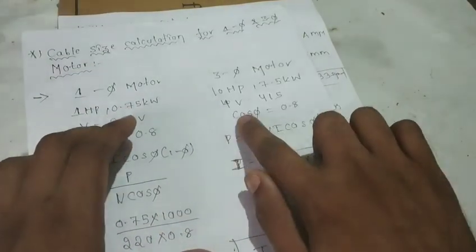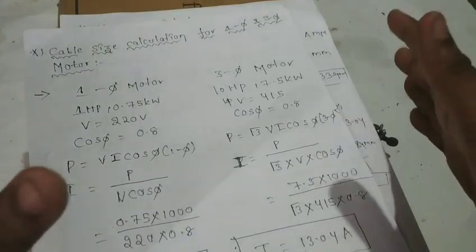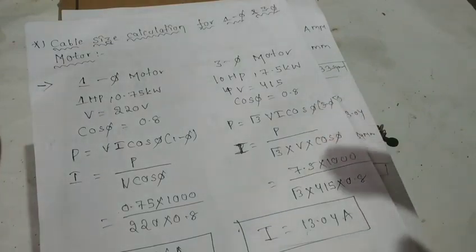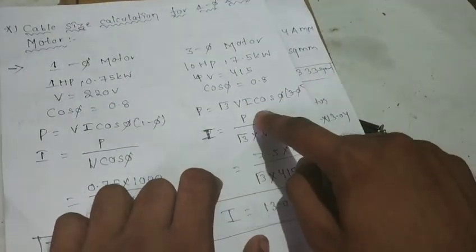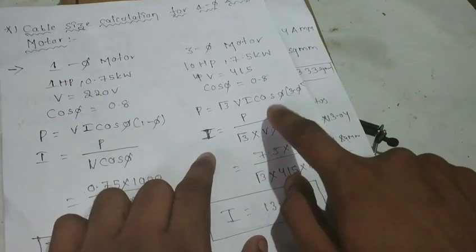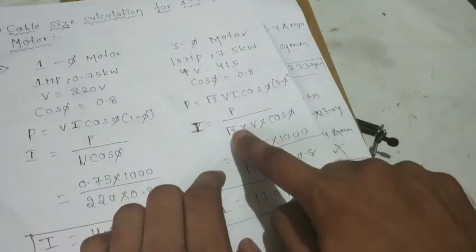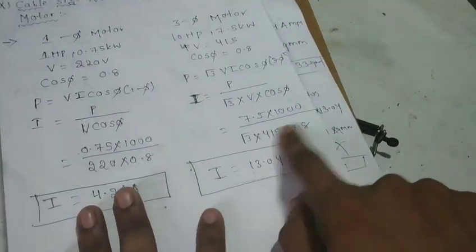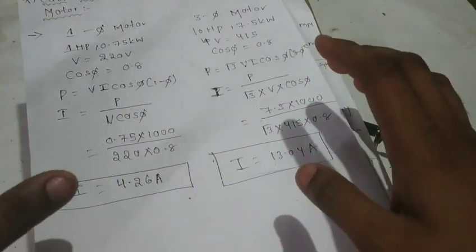This is the motor rated full load current. Using the formula I = P / (V·cosφ), now for the 3-phase motor: I = P / (√3·V·cosφ). Power is 7.5kW. So: 7.5 into 1000, divided by √3 into 415V, cosφ is 0.8. Final value: I = 13.04 amps. This is I1 for the 3-phase motor.